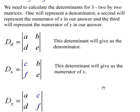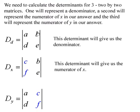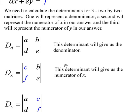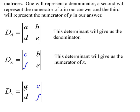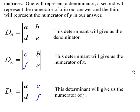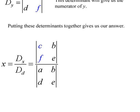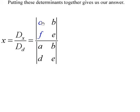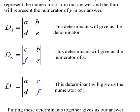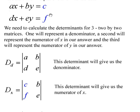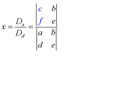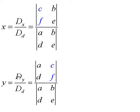Our third matrix represents the numerator of y, so we replace the y coefficients (b and e) with those constants c and f, and keep the x coefficients. We calculate that determinant to get the numerator of y. Putting it all together: x equals the determinant of the numerator-of-x matrix (where constants replaced x coefficients) over the determinant of the denominator. The coefficient matrix contains all the coefficients of our system, not the constants. And y equals the determinant of the numerator-of-y matrix over the determinant of the denominator.